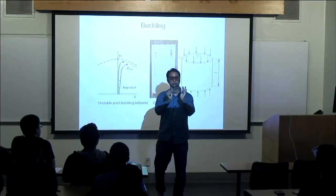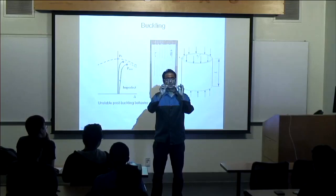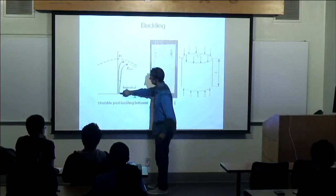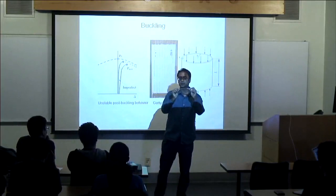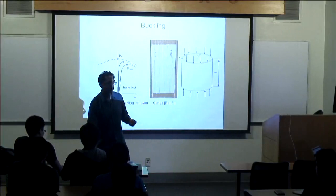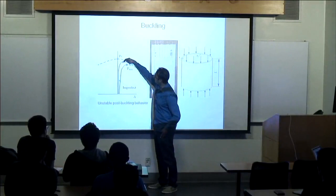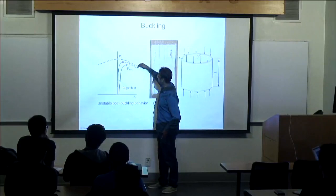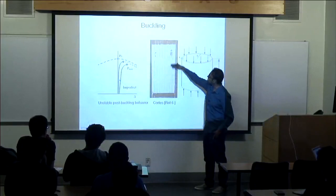But if everything started imperfect — say the initial geometry was slightly imperfect, like every real structure is — and I apply that load, you'll expect the deflection to increase slowly with load. These are imperfect columns. When I increase the load, the deflection slightly increases, and then there's a point at which everything will become unstable again. Buckling in general is classified as stable or unstable. Typically the column will become unstable because now I have a situation of excessive load.